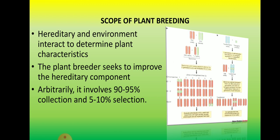Arbitrarily, plant breeding involves 90% to 95% collection of planting materials or parent materials. In that 90% to 95% collection, you collect all the best possible sources of your parent plants. This involves the collection of varieties or entries from different parts of the region, from different companies and different institutions.